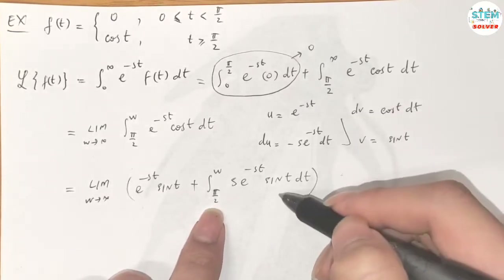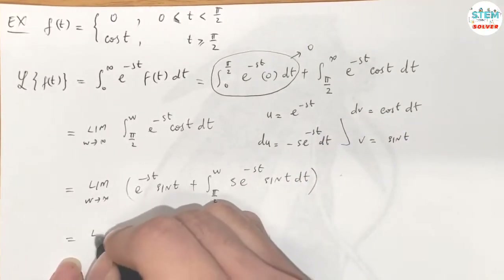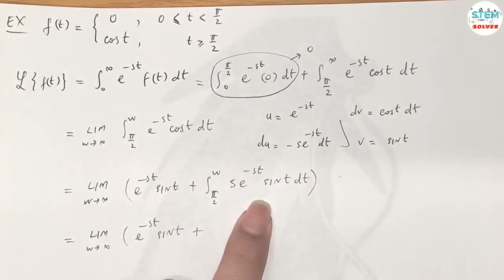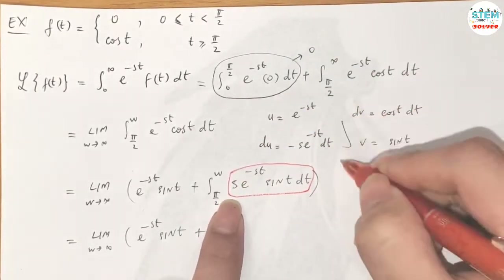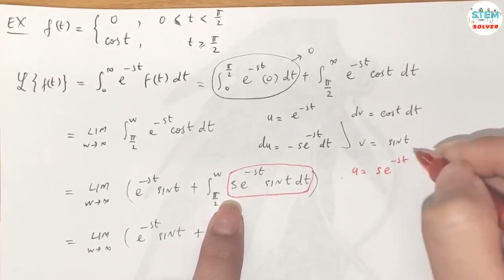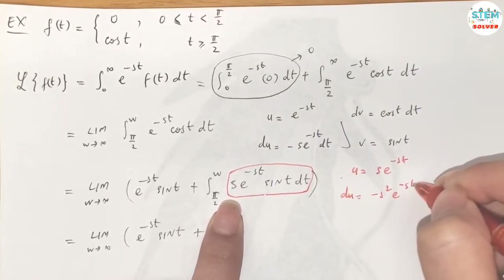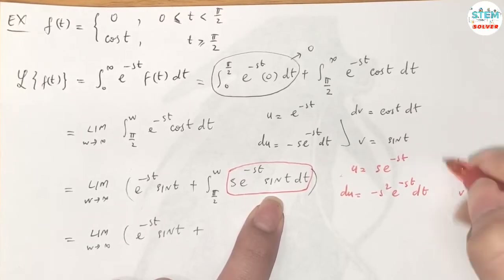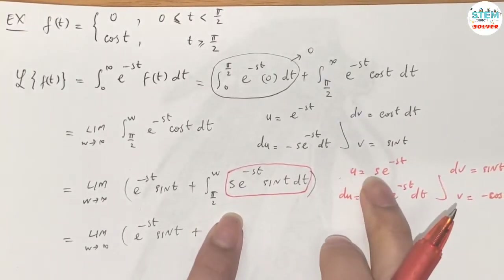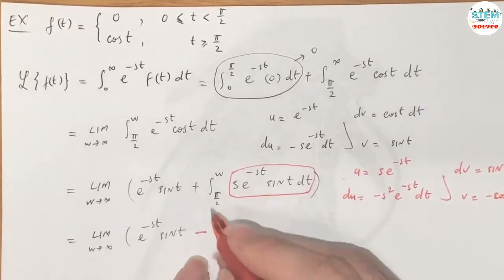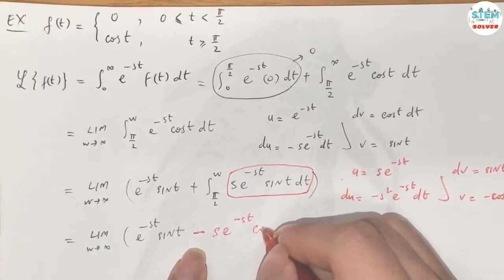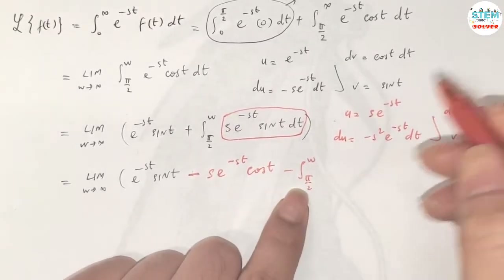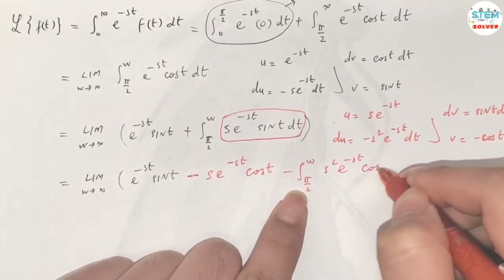We need to apply integration by parts again to this new integral. Let u = s e^(-st), so du = -s² e^(-st) dt, and dv = sin(t) dt, so v = -cos(t). This gives: negative s e^(-st) cos(t) minus the integral from π/2 to w of s² e^(-st) cos(t) dt.